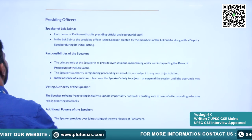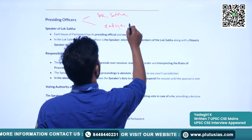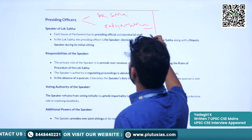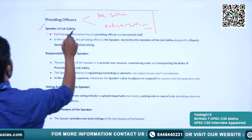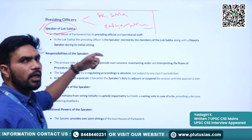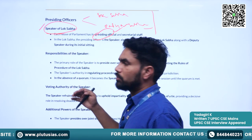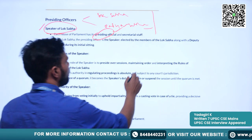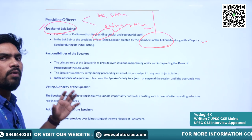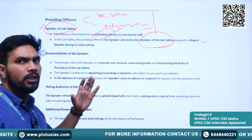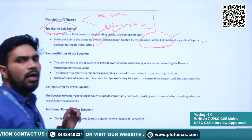Next we will try to understand the presiding officers for both houses — Lok Sabha and Rajya Sabha. To conduct business smoothly there should be a leader presiding over the houses of Parliament. We have two officials. First is the Speaker of the Lok Sabha — it is his duty to conduct the proceedings of the Lok Sabha. The Speaker will be elected by the members of the Lok Sabha, along with the deputy speaker, once a new house starts its sittings.